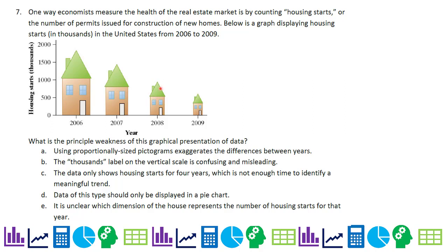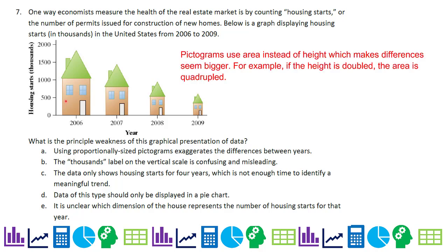But you can see that the area of this is not half of this. Pictograms, because they scale like this, they actually exaggerate the difference. We use area instead of height, which makes it bigger. Height is doubled, so is the width, which means the area is quadrupled. Using proportionally sized pictograms exaggerates the difference between years.